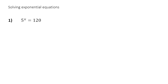So here we've got 5 to the power of x equals 120. How can we solve that? Well, the key to this is to log both sides. So let's do that. We get log of 5 to the power of x is equal to log 120.